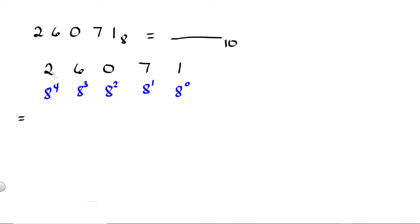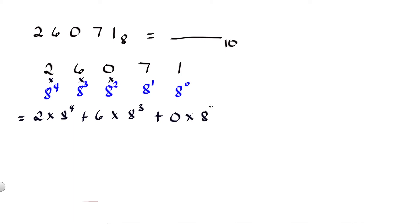Next is to multiply: 2 times 8 raised to 4, plus 6 times 8 raised to 3, plus 0 times 8 raised to 2, plus 7 times 8 raised to 1, plus 1 times 8 raised to 0.